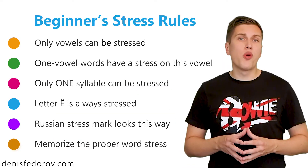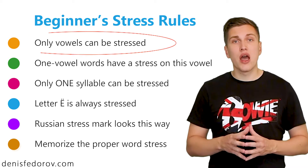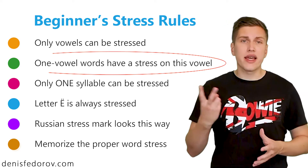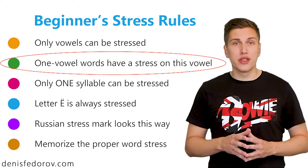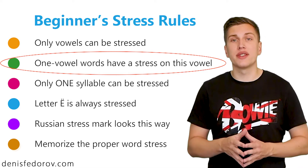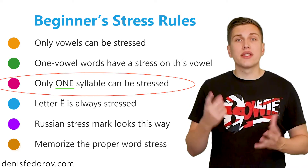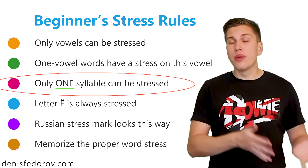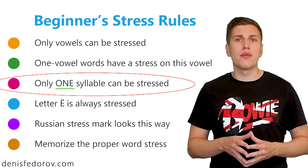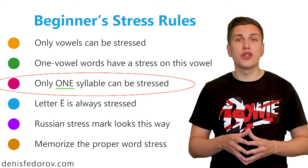Here are the salient points of Russian stressing for beginners. First, only vowels can be stressed — exactly as in English. Second, if there is only one vowel in a word, put stress on it. Short words with one vowel have that single vowel stressed. Third, there can be only one stressed syllable in a word — no double or triple stress, just one syllable stressed and others not. In practice there can be rare exceptions for some multi-composite words, but you do not need to know about those at all.